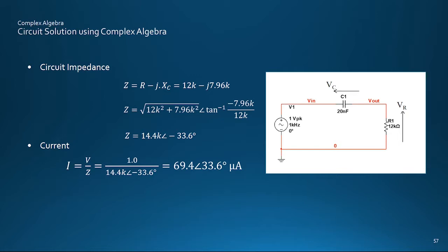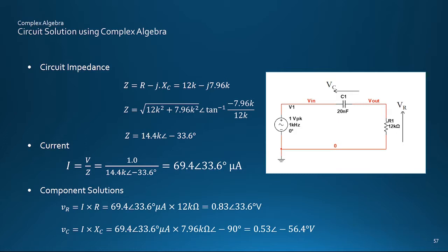Having got the impedance, the circuit current is now just v over z, giving 69.4 microamps at an angle of plus 33.6 degrees. The resistor voltage is i times r, or 0.83 volts at 33.6 degrees leading, and the voltage across the capacitor is i times xc, or 0.53 volts at minus 56.4 degrees, completing the solution.